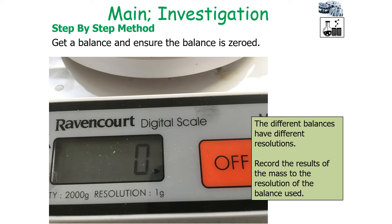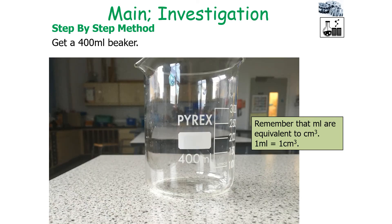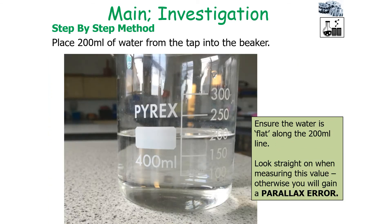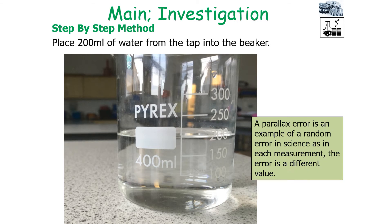If the balance had no decimal places in its recording, you would record to no decimal places. If it had three decimal places, you would record your value to three decimal places. You would then get a 400ml beaker — remember, millilitres are equivalent to centimetres cubed — and place 200ml of water from the tap into the beaker. Ensure the water is flat along the 200ml line and look straight on when measuring this value, otherwise you would gain a parallax error.